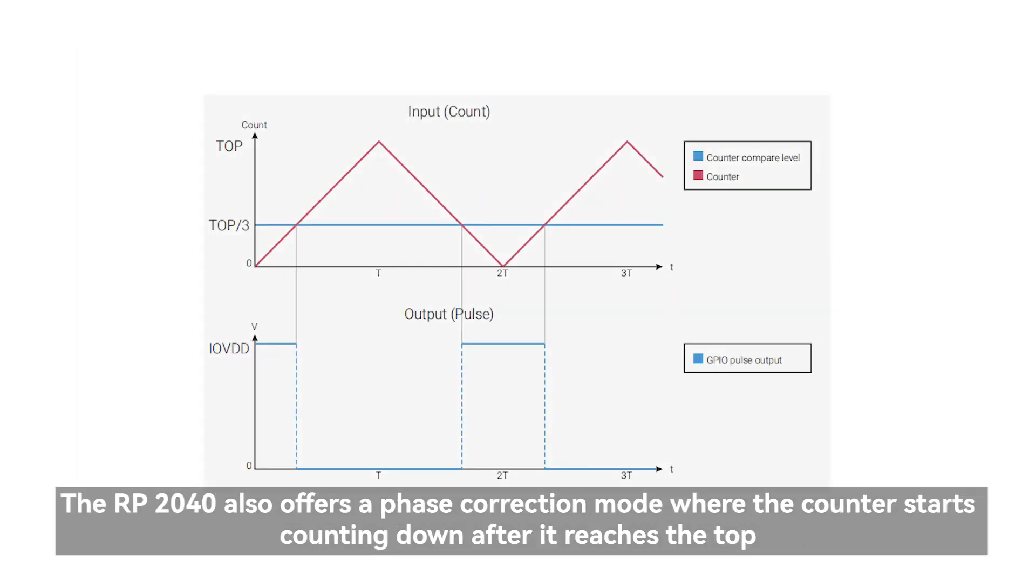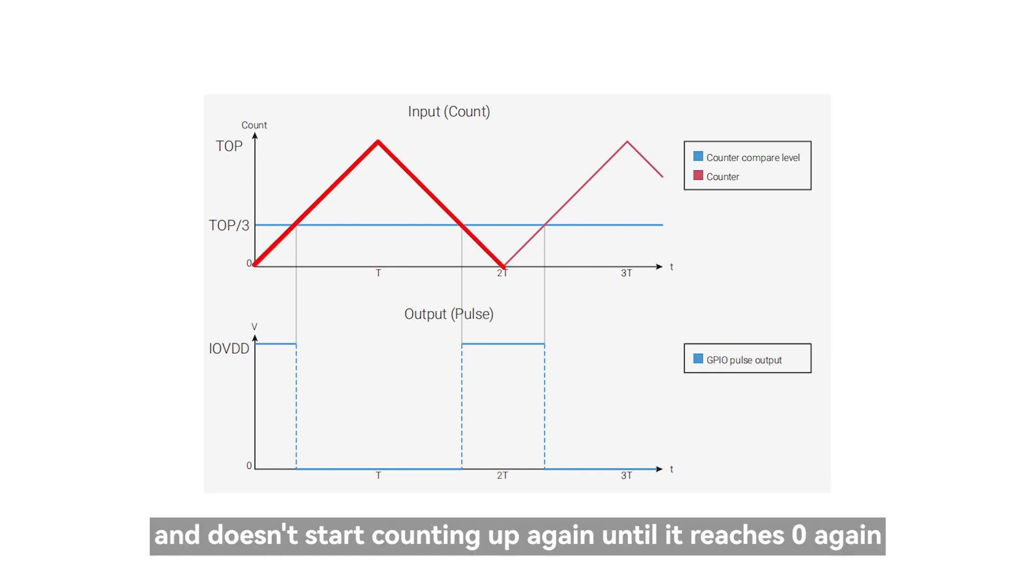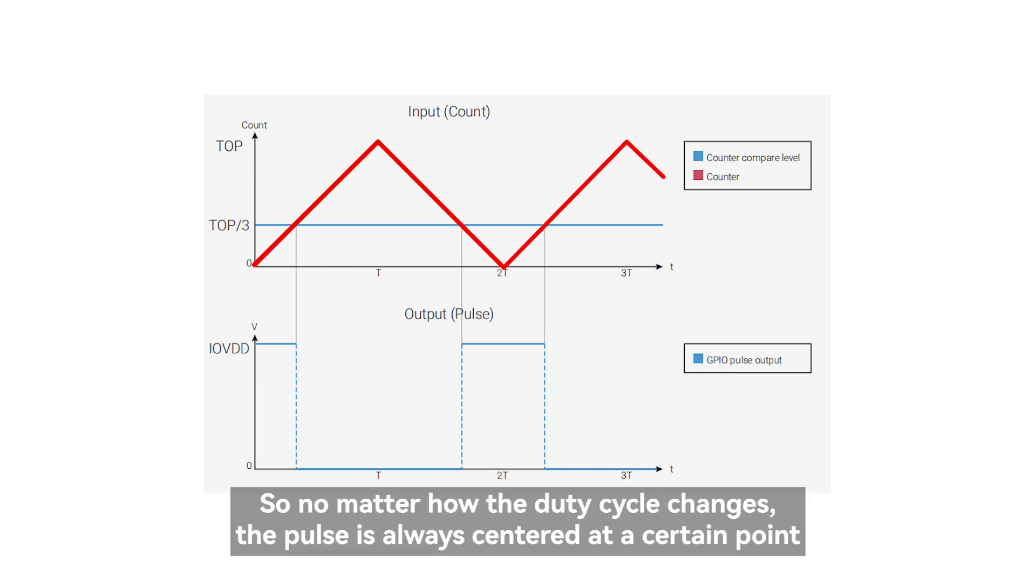The RP2040 also offers a phase correction mode where the counter starts counting down after it reaches the top, and doesn't start counting up again until it reaches zero again. So no matter how the duty cycle changes, the pulse is always centered at a certain point.